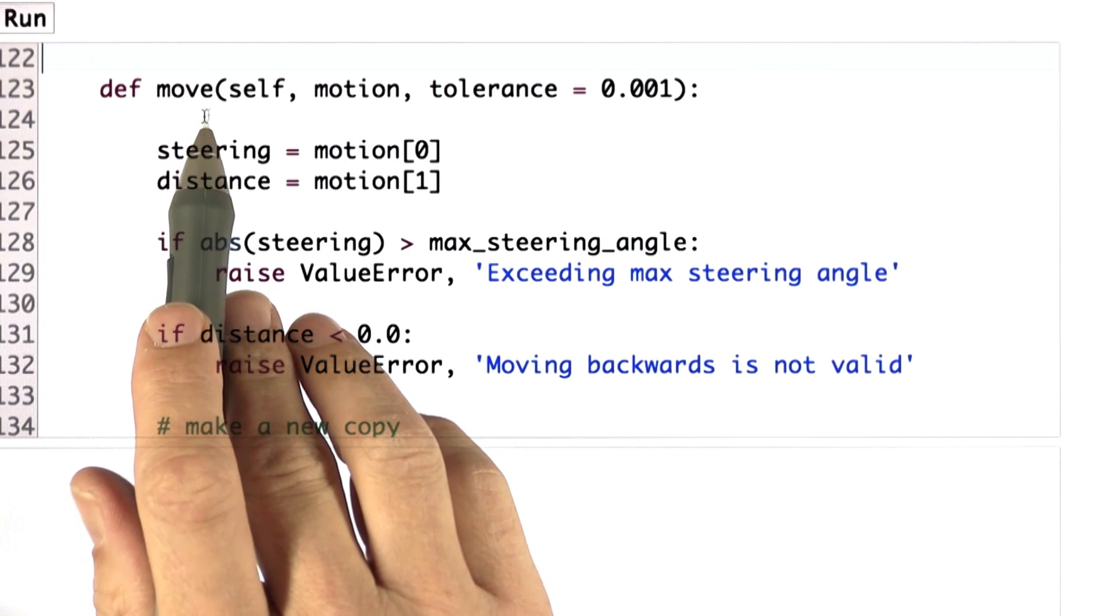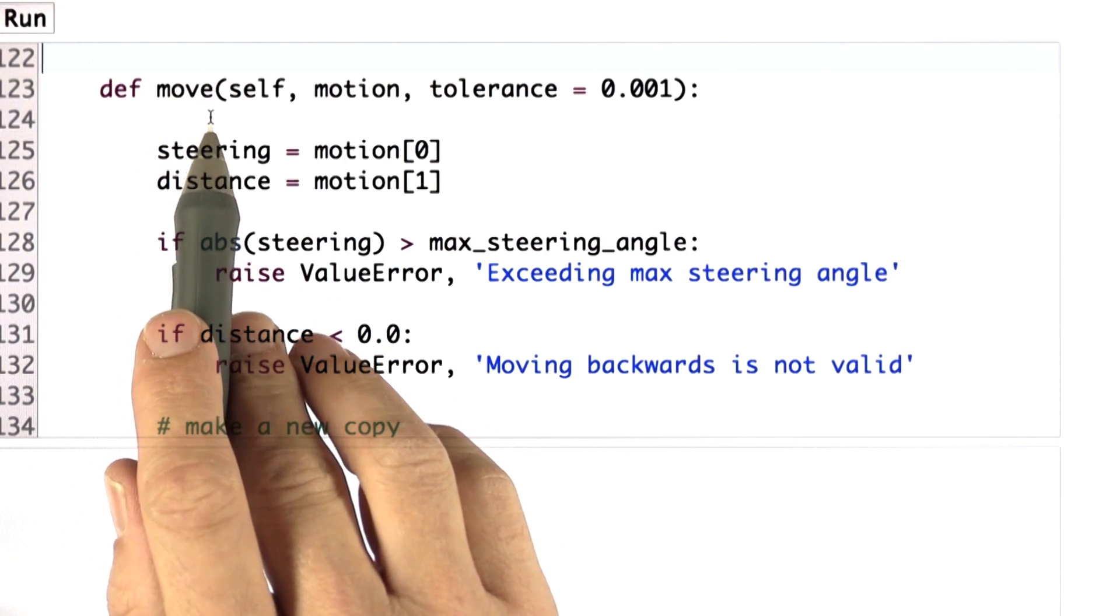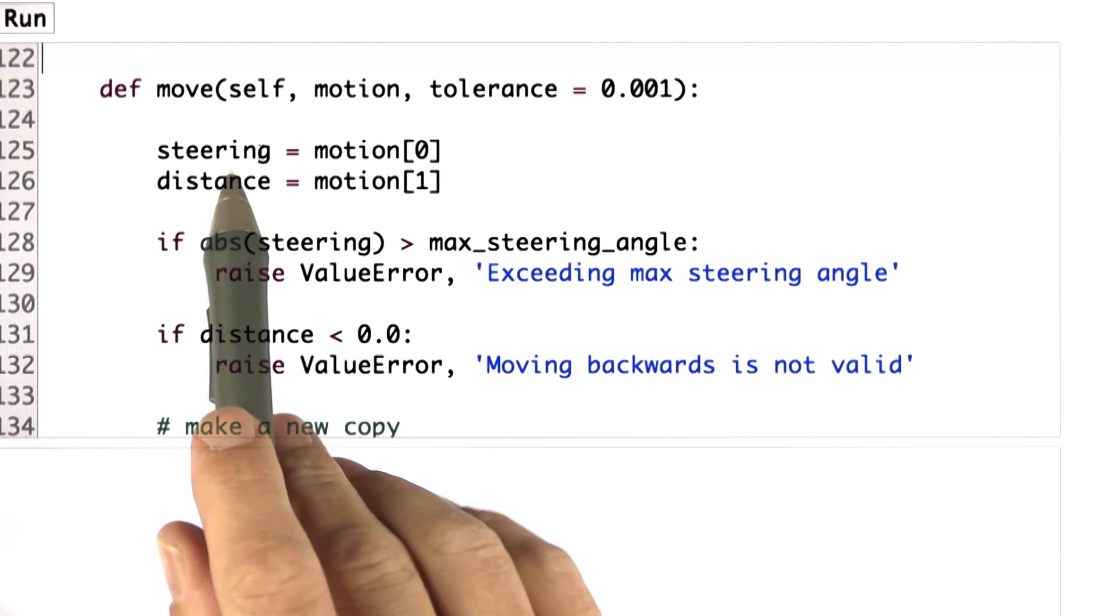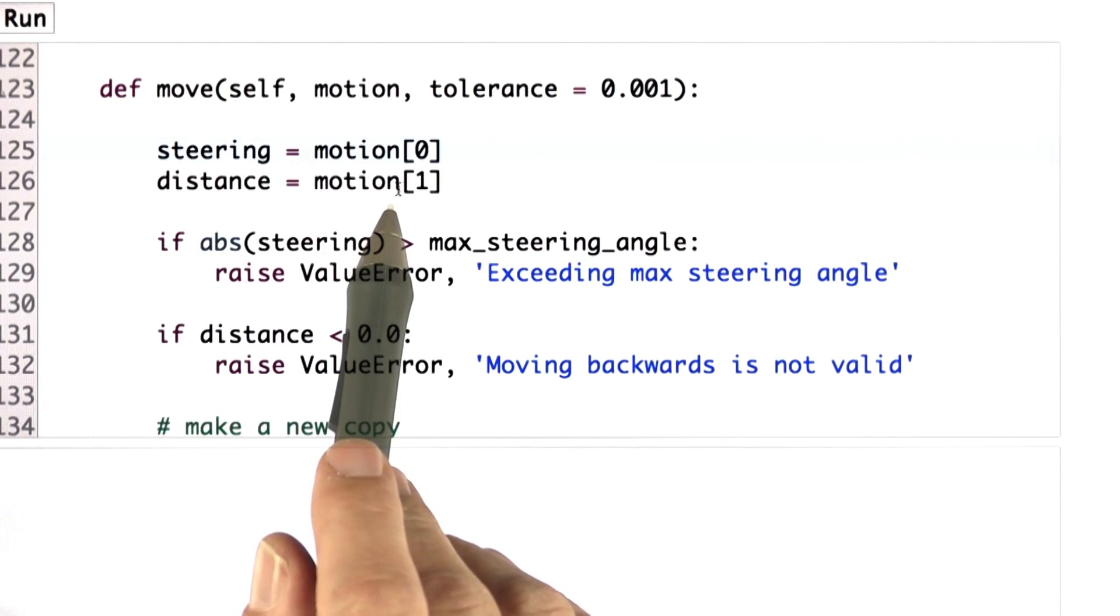So here's a function move as a class function of the class robot that I implement where I get my motion vector. The motion vector is defined to be steering first, then distance.